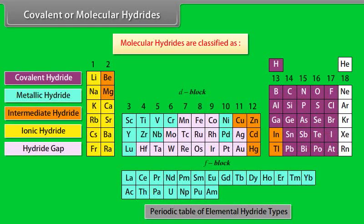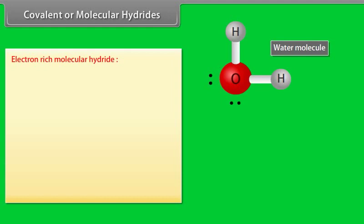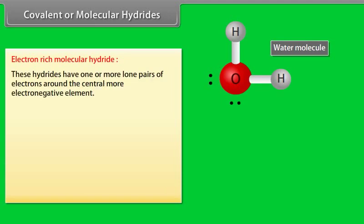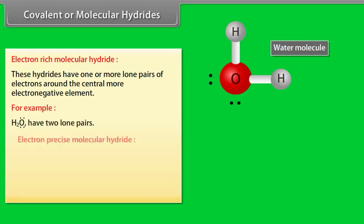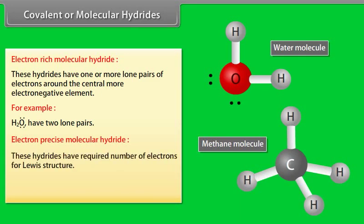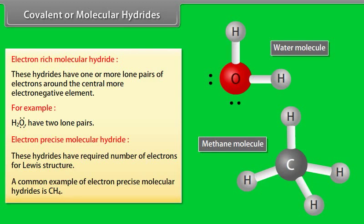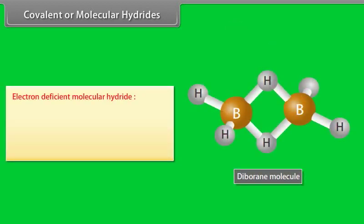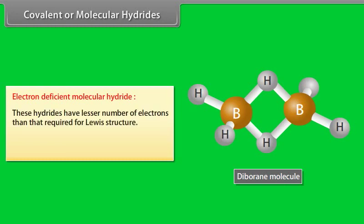Covalent or molecular hydrides. Molecular hydrides are classified as electron-rich molecular hydride. These hydrides have one or more lone pairs of electrons around the central more electronegative element. For example, water has two lone pairs. Electron-precise molecular hydride. These hydrides have required number of electrons for Lewis structure. A common example of electron-precise molecular hydride is methane. Electron-deficient molecular hydride. These hydrides have lesser number of electrons than that required for Lewis structure. A common example of such molecular hydride is diborate.